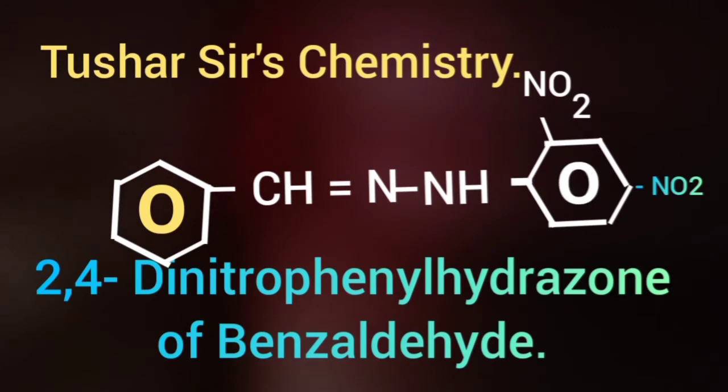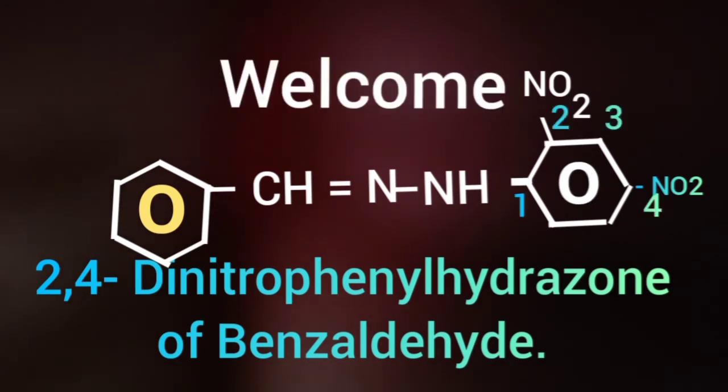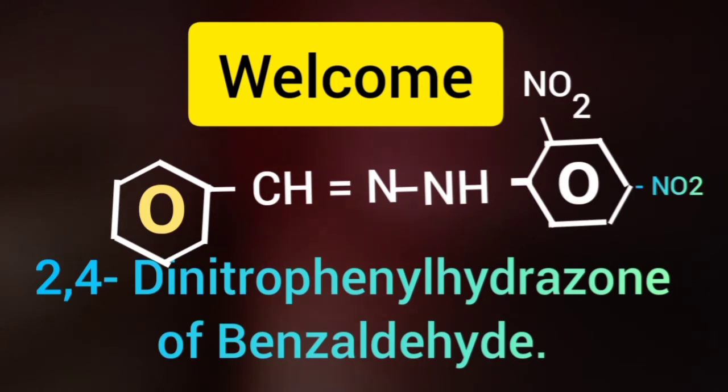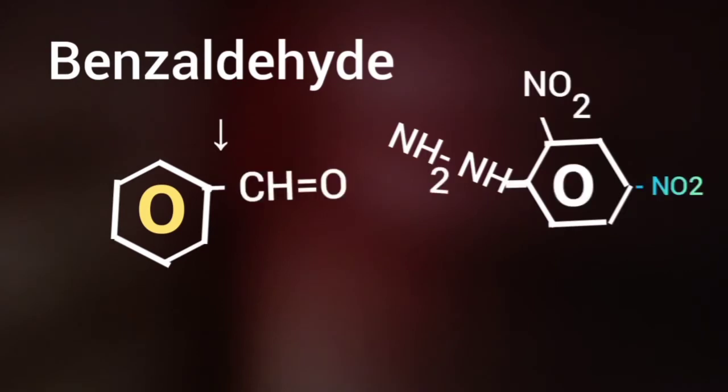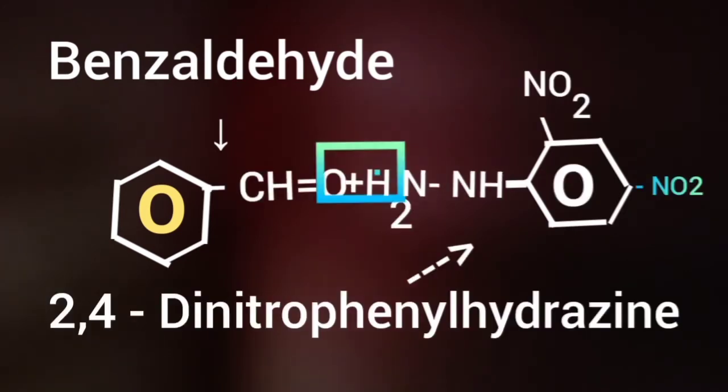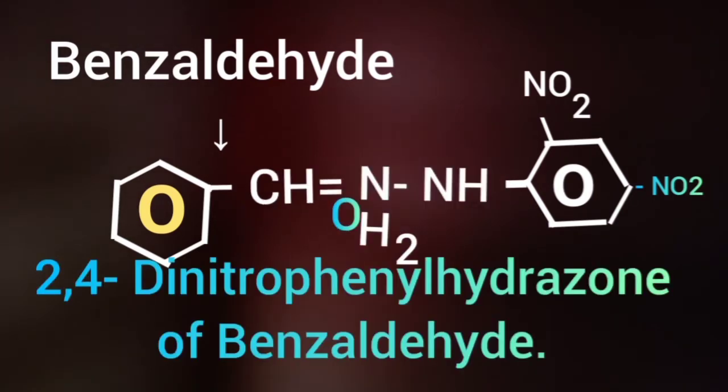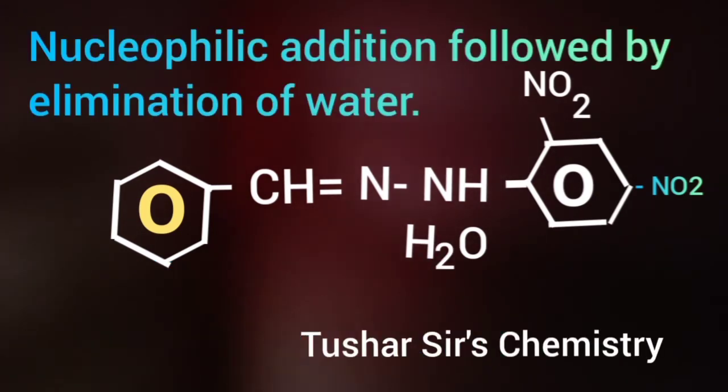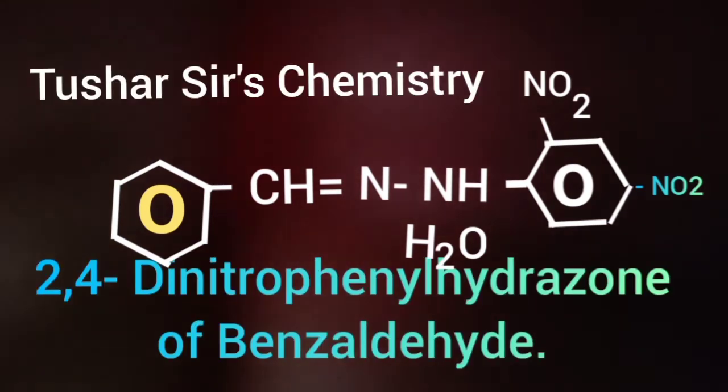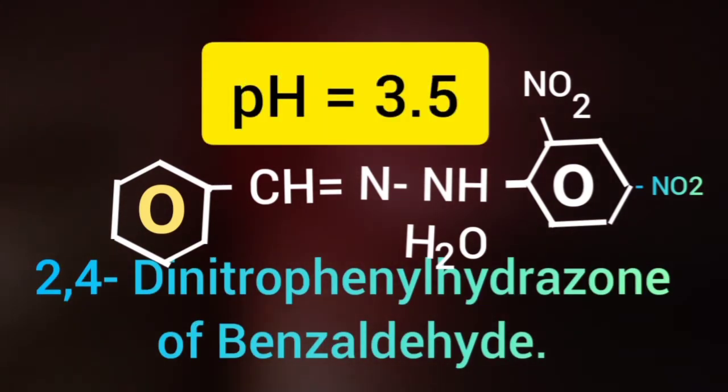Hello, welcome back to my channel. In this video, we will discuss the structure of the derivative of 2,4-dinitrophenylhydrazone of benzaldehyde. Benzaldehyde on treatment with 2,4-dinitrophenylhydrazine gives 2,4-dinitrophenylhydrazone of benzaldehyde. This is a nucleophilic addition reaction followed by elimination of water. The reaction takes place at optimum pH of 3.5.